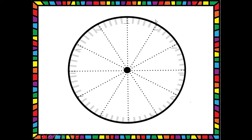Start at the top, trace it around: one, trace it again — two, three, four, five, six. It looks like we're about halfway there and we have six equal pieces. Keep going: seven, eight, nine, ten, eleven, and twelve. So we have twelve equal pieces on our clock, and now you can see that we filled in the numbers just like a regular clock would look.